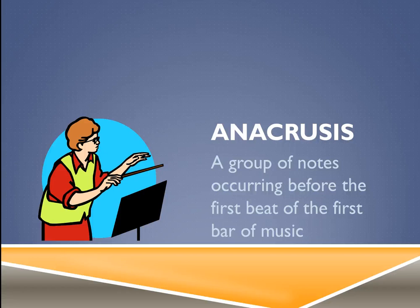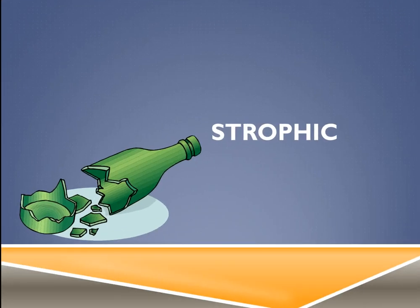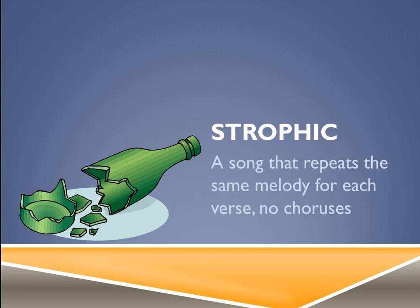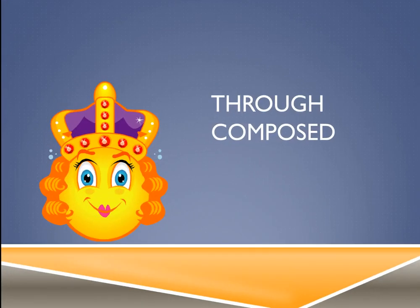Strophic — I've got a green bottle there — refers to a song that repeats the same melody for each verse with no choruses. Ten Green Bottles is an example: the melody repeats for every verse. So a strophic song is simply one that repeats the same melody for each verse.